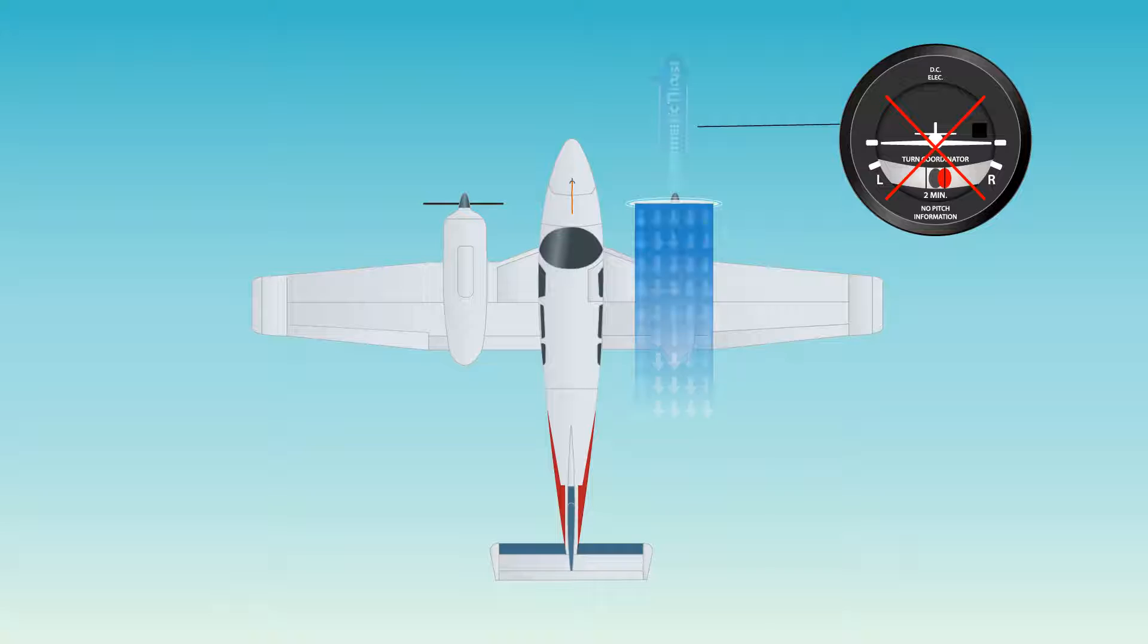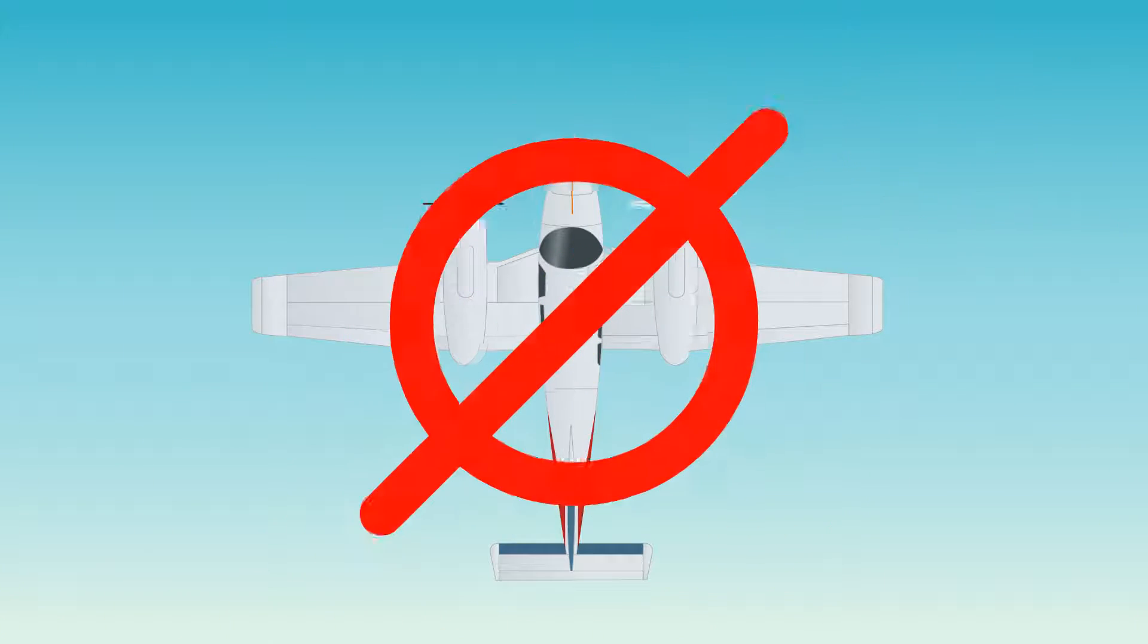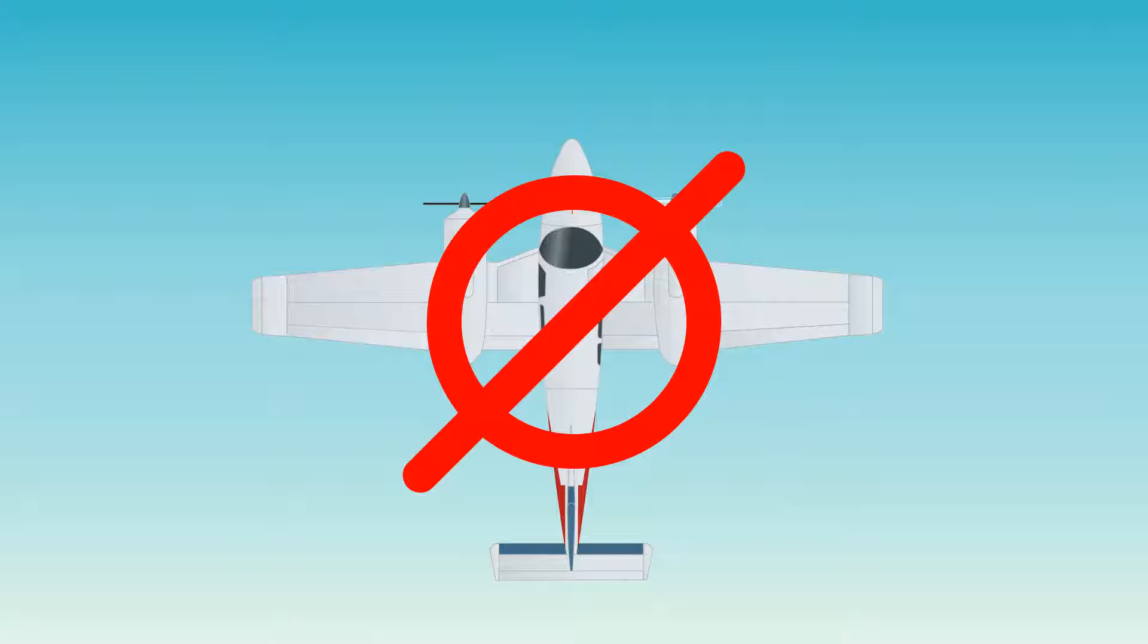When a multi-engine airplane is being flown with an inoperative engine, the ball centered is no longer the indicator of zero sideslip due to asymmetric thrust. Actually, there is nothing within the aircraft that directly indicates a zero sideslip condition.